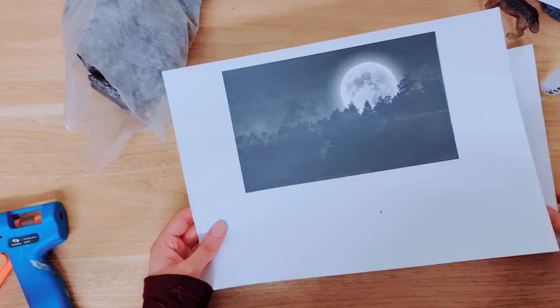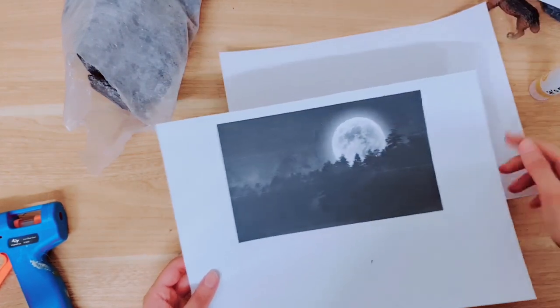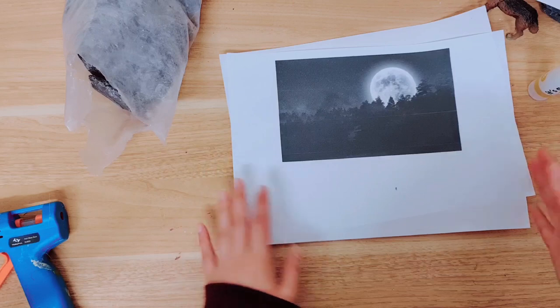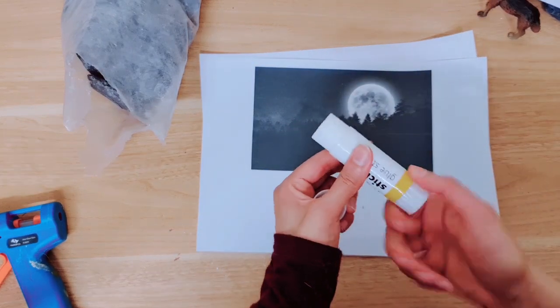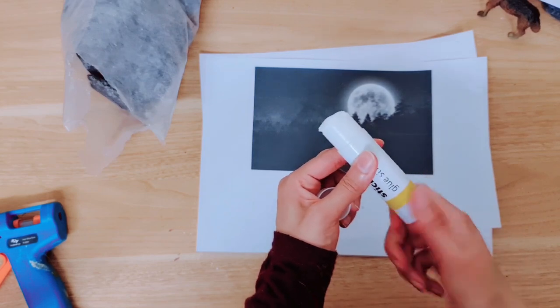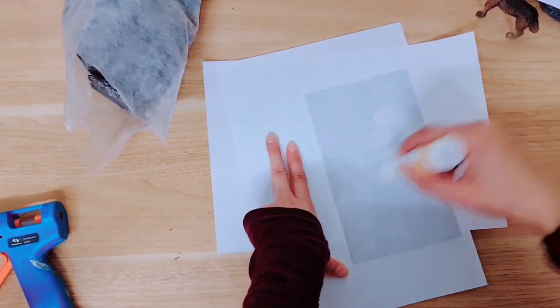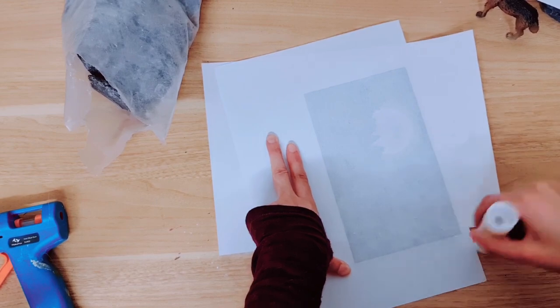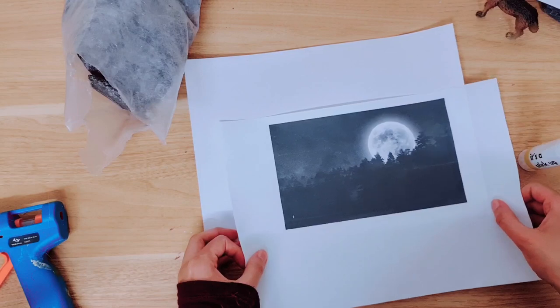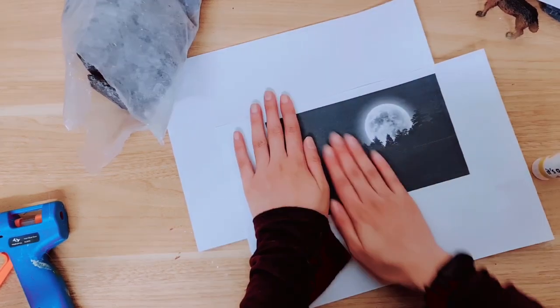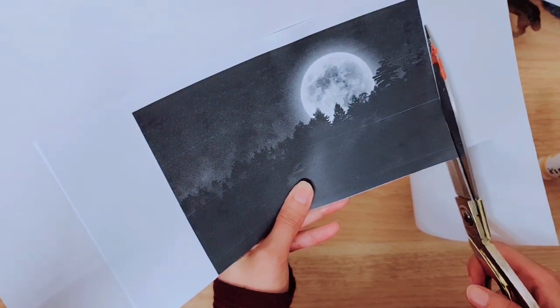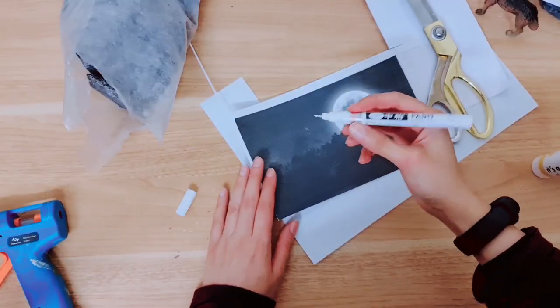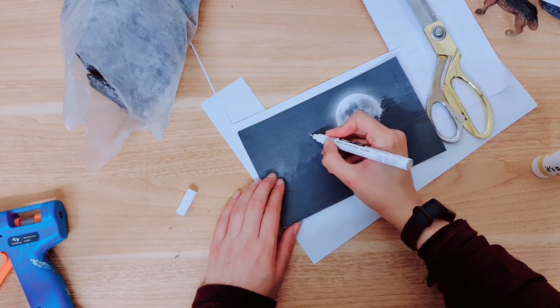Then I've printed this off the internet and I'm going to add it to some card. If you can print directly onto card that's super, mine just keeps jamming so I'm going to stick it down and then cut it to size. I'm taking this paint pen just to add a few stars.